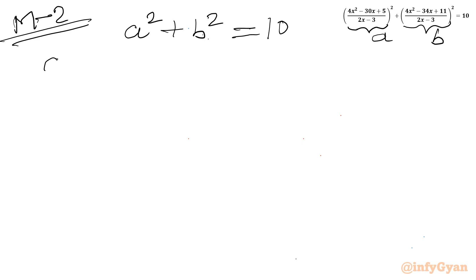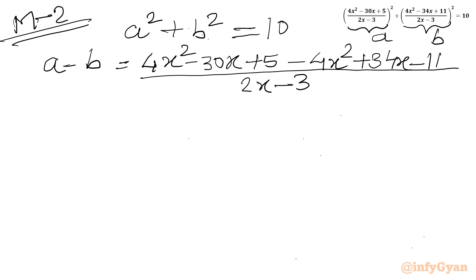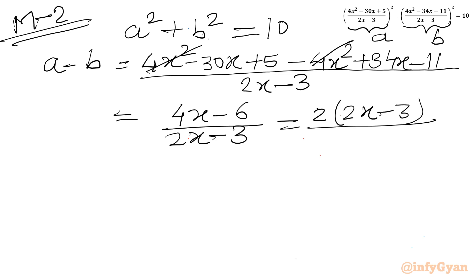Now I will calculate the value of A minus B. Let us subtract: 4x² minus 30x plus 5, then minus 4x² plus 34x minus 11, all over 2x minus 3. The 4x² terms cancel, and we get (4x minus 6) over (2x minus 3). Taking 2 common from the numerator gives 2(2x minus 3) over (2x minus 3), which cancels out. So A minus B equals 2.